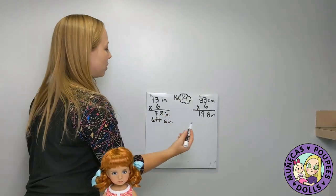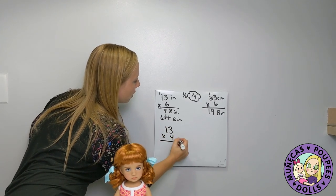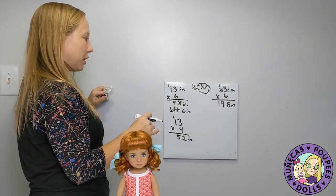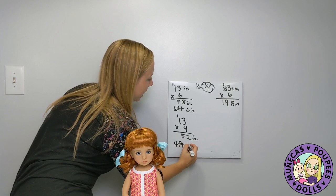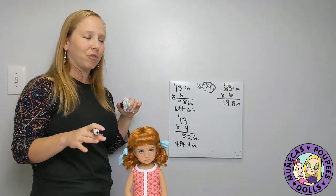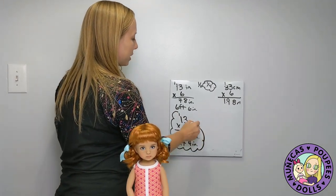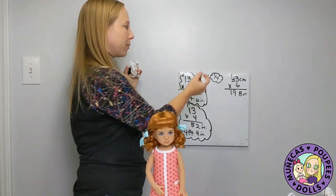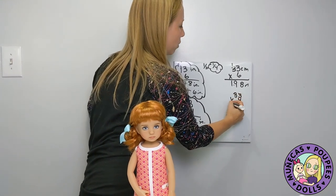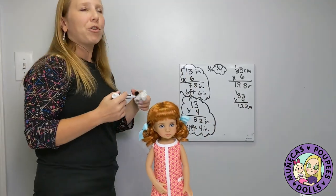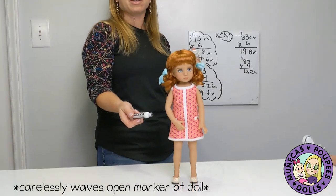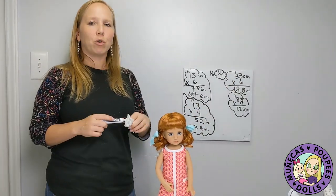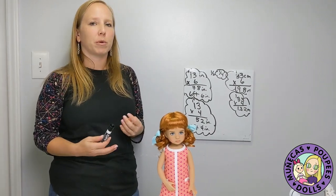Now let's try 1/4 scale: 13 times 4 is 52 inches — four feet four inches tall. That's more like it, a bit on the short side for her age but much more reasonable. In centimeters: 33 times 4 is 132 centimeters, or 1.32 meters. So for buying accessories I'd go with 1/4 scale for Little Darling, though 1/6 accessories can work too.